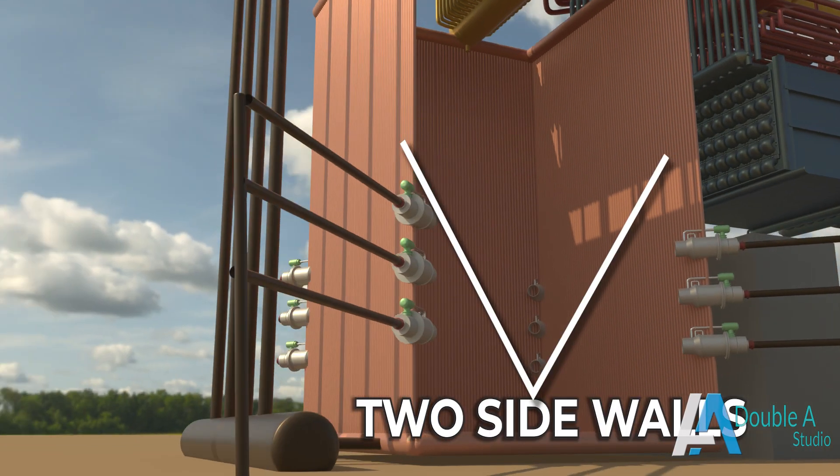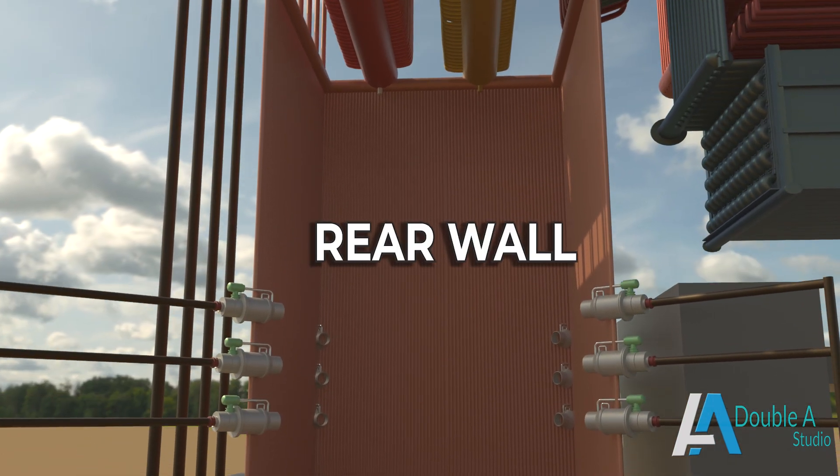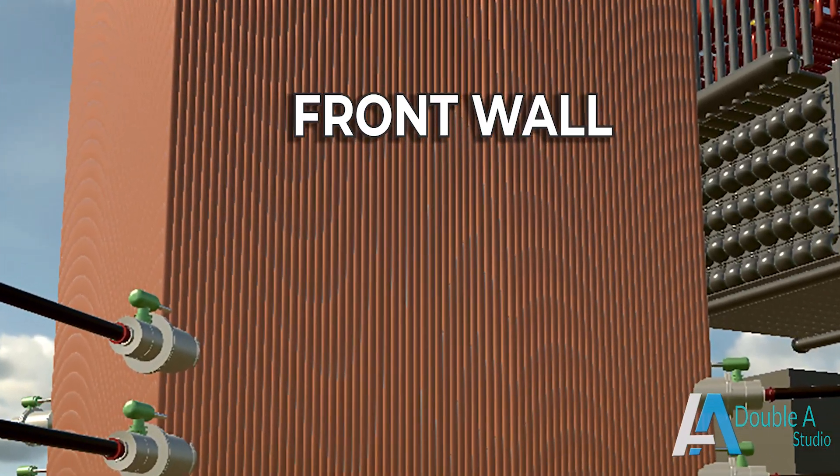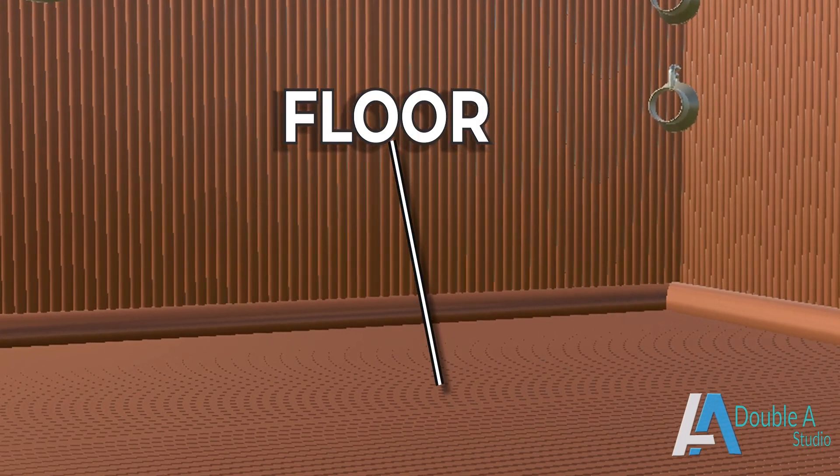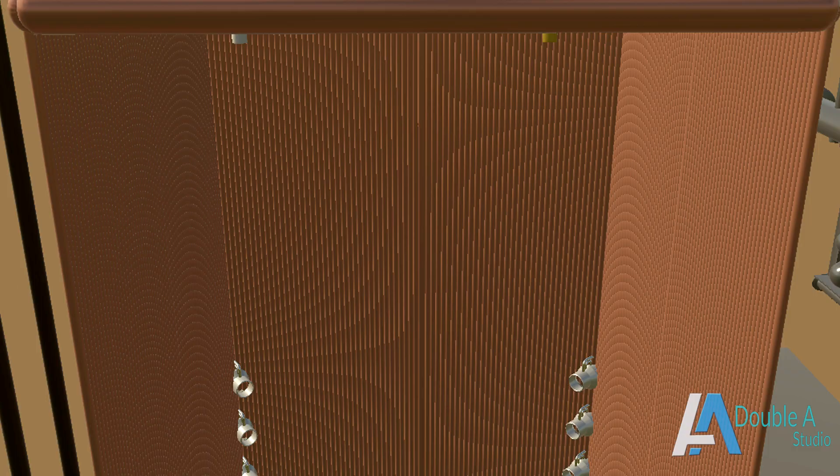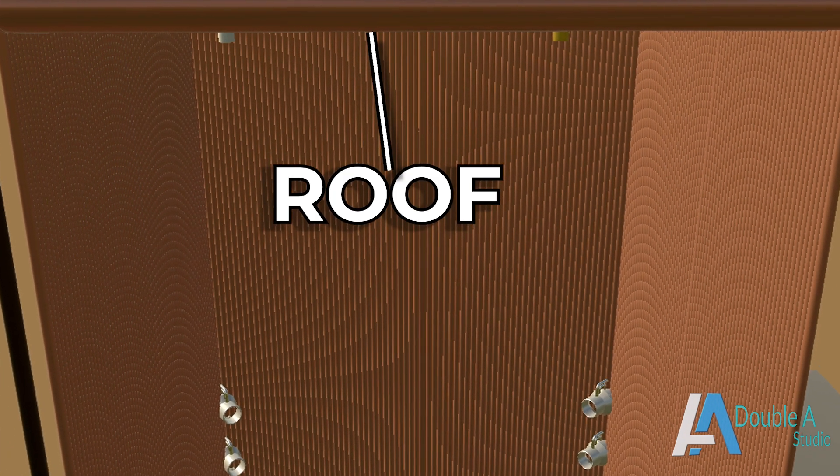It has typically two side walls, a rear wall, a front wall, a floor, and the roof section.